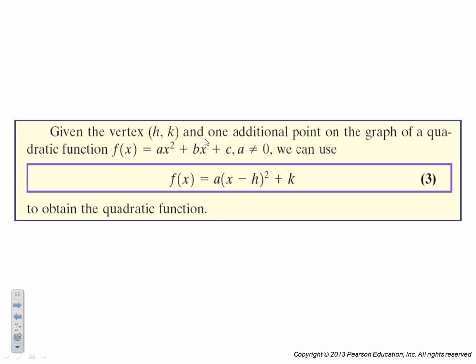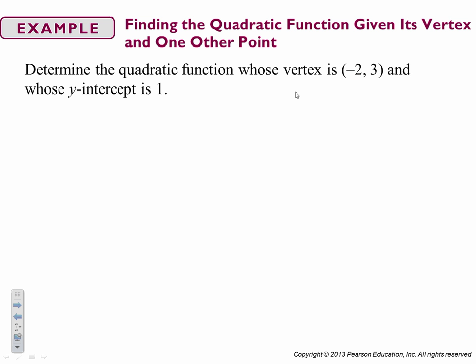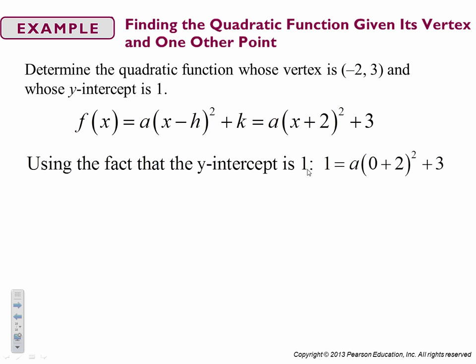If we're given the vertex as one additional point, we can plug it in and solve to find our quadratic function. Let's see how that works. The vertex is at negative two, three, and the y-intercept is one. So I put in negative two for my h, and I put in three for my k. The y-intercept is at one. So when y is equal to one, x is equal to zero. So if I take this equation back, and I know that I have plus two and plus three, we can solve for a. So we simplify that down, and we get a is equal to negative one-half. So I take that and put my function back together. f of x is equal to negative one-half x plus two squared.